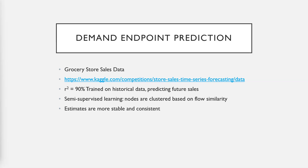Using grocery store sales data downloaded from a Kaggle competition, I was able to build a prediction model for the demand of grocery store sales. The model had an R-squared of 90 percent.